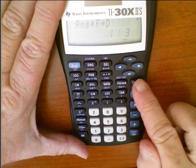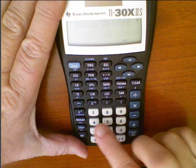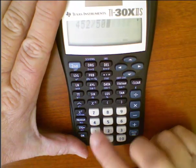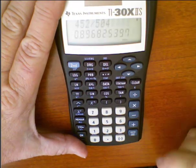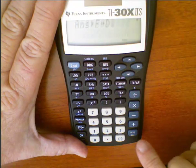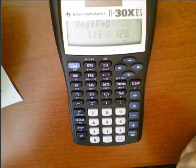So we'll do one more that is just a higher fraction. Say if I have 452 divided by 504. We wouldn't want to try to reduce that by hand. So we'll get a decimal. We will do second, and we'll change it back to a fraction. 113 over 126. So this can be a nice tool.